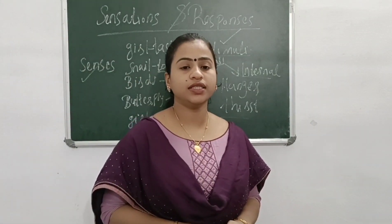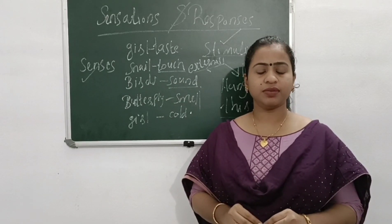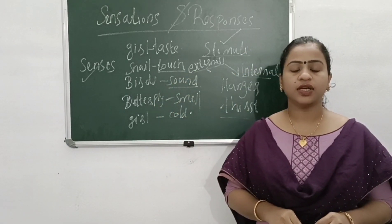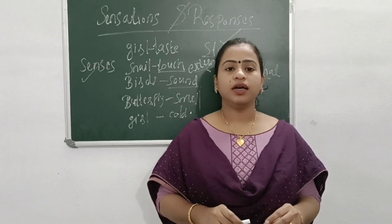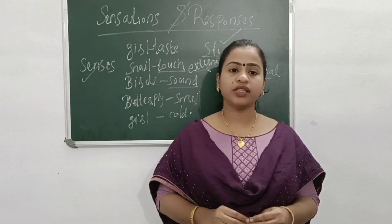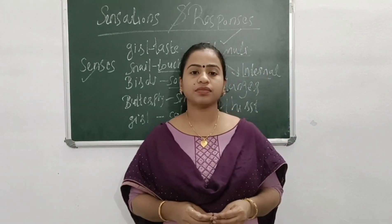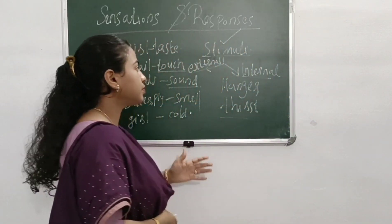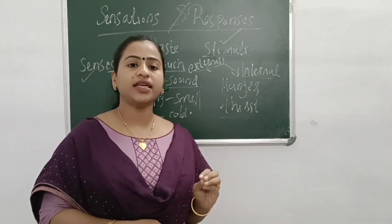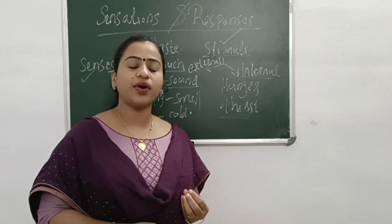We discussed the term stimulus. Now, how does our body receive the stimulus? Imagine in a reception or a party, there is a reception committee whose function is to receive and identify guests. Likewise, inside our sense organs, there are specialized cells called receptors. Their function is to receive and identify the stimulus.